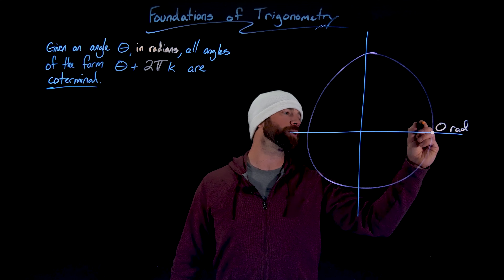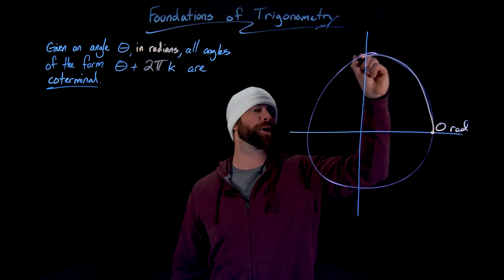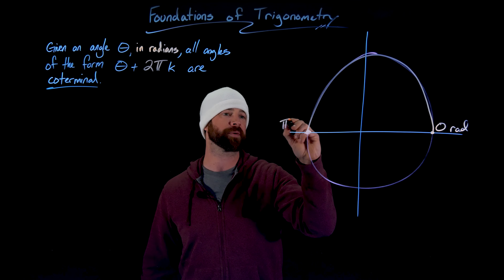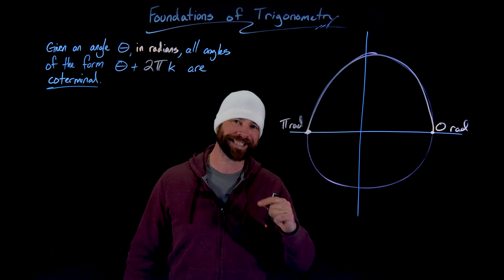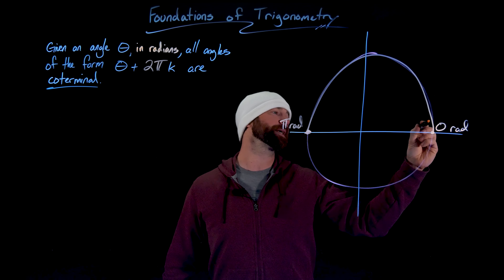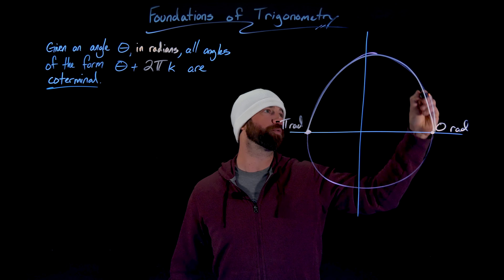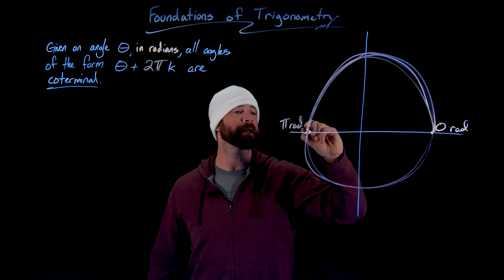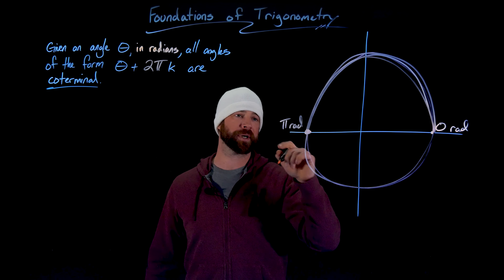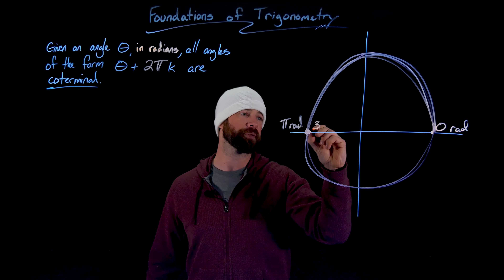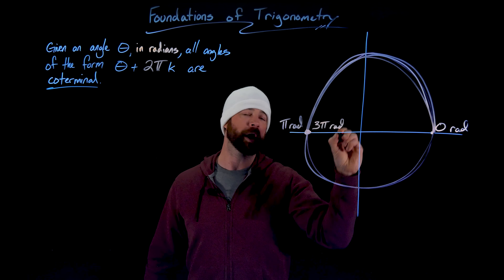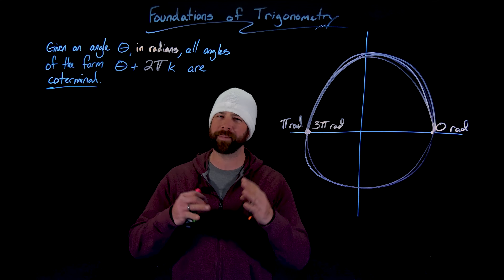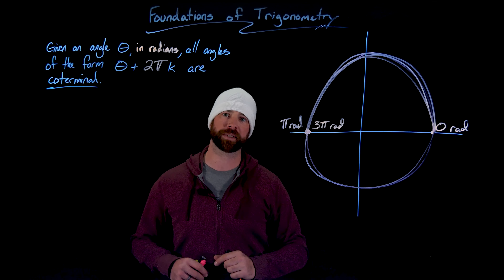For an easy example: if we start at zero and go pi radians — which takes us to 180 degrees here — that's exactly the same endpoint as 3 pi radians. Going 2 pi radians and then one more pi lands us at the same place. So pi radians and 3 pi radians are coterminal; they end at the same point around the circle.